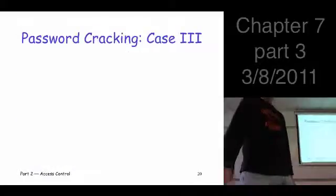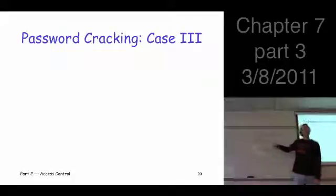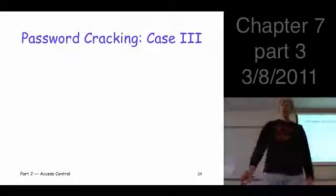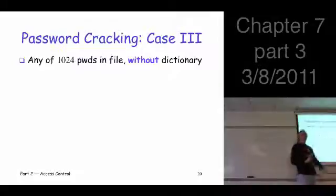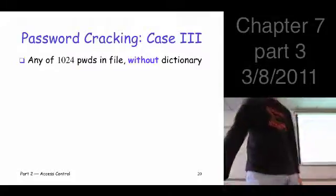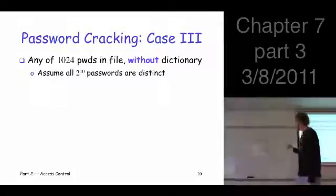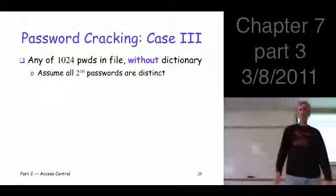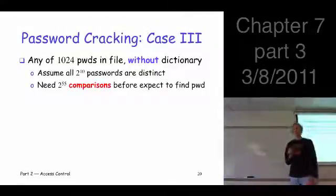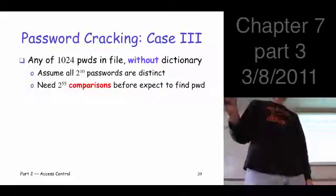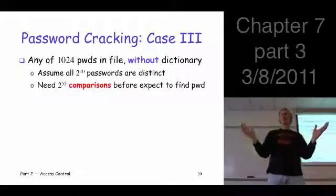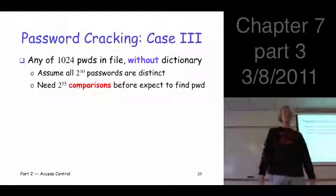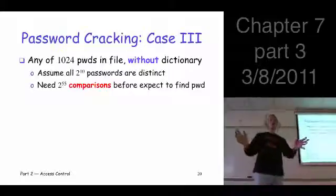The more interesting cases are the cases where you actually bring this password file into play. You have more than one password. You're willing to crack any of these passwords. That's great. To make it a little simpler, let's suppose Trudy's trying to attack the password file without a dictionary. She doesn't use her dictionary. We'll assume that all these passwords are distinct. We're really in the exhaustive search case because we're not using the dictionary. So what we need are 2 to the 55 comparisons, and we'll expect that we find a match.